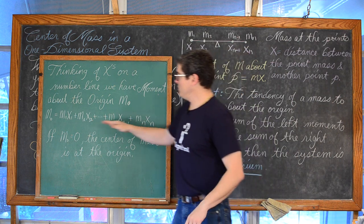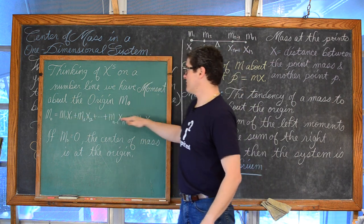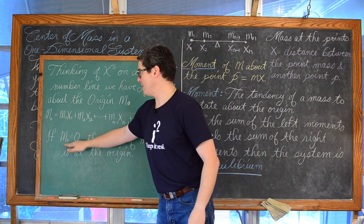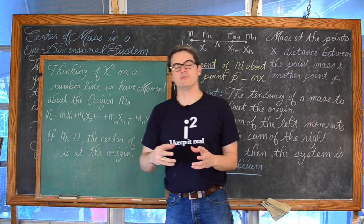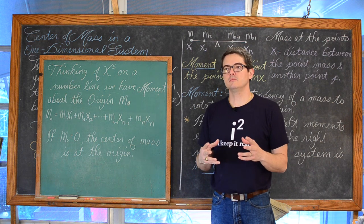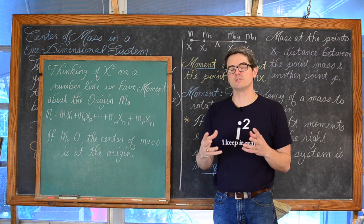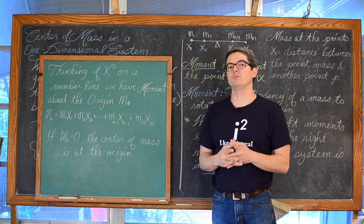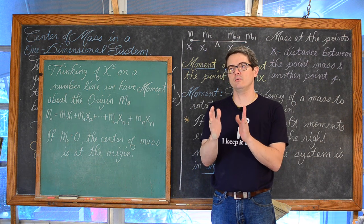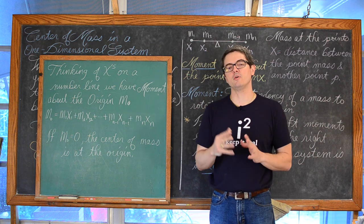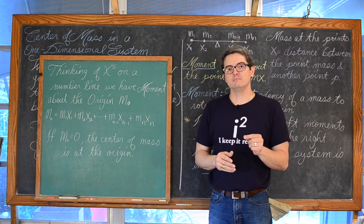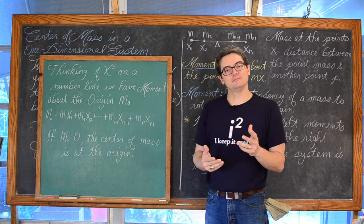If you do the products of all of these and add them up and you don't get a sum of 0, then this one-dimensional system is not in equilibrium. We need to talk about how to adjust the placement of the fulcrum so that it is.